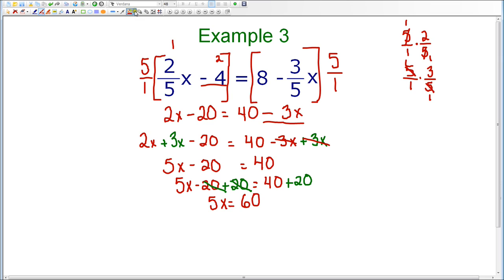Now I'm down to a simple one-step equation where I have 5x, and if I divide by 5 on both sides of the equation, I know that 5 divided by 5 is 1, and 1 times x is x. So I have x equals 60 divided by 5, which is 12. So I end up with a final answer of x equals 12.